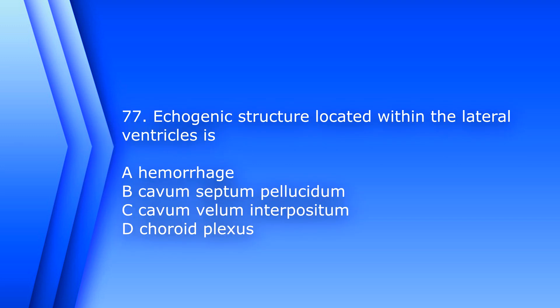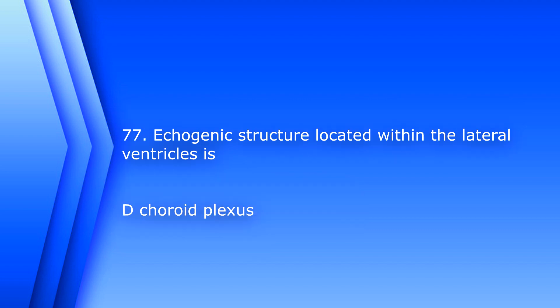Question 77. An echogenic structure located in the lateral ventricles is? A. Hemorrhage. B. Cavum septum pellucidum. C. Cavum vellum interpositum. D. Choroid plexus. The answer is D, choroid plexus.